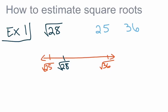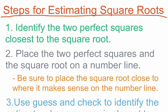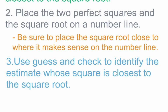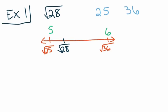We go back to those perfect squares: the square root of 25 is 5, and the square root of 36 is 6. That tells us that the square root of 28 is 5-point-something. And because the square root of 28 is close to the square root of 25, it should be 5-point-something small. Now we need to use guess and check to identify the estimate whose square is closest to the radicand. Since it's pretty close to 25, I'm going to guess 5.2.